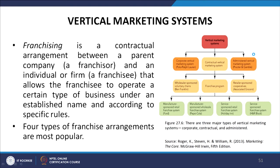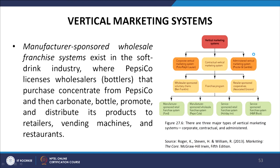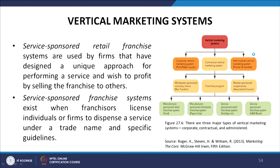Four types of franchising arrangements are most popular. First, manufacturer-sponsored retail franchise systems are prominent in the automobile industry, where a manufacturer such as Ford licenses dealers to sell its cars subject to various sales and service conditions. Second, manufacturer-sponsored wholesale franchise systems exist in the soft drink industry, where PepsiCo licenses wholesalers (bottlers) that purchase concentrate from PepsiCo and then carbonate, bottle, promote, and distribute its products to retailers, vending machines, and restaurants. Third, service-sponsored retail franchise systems are used by firms that have designed a unique service approach and wish to profit by selling the franchise to others.